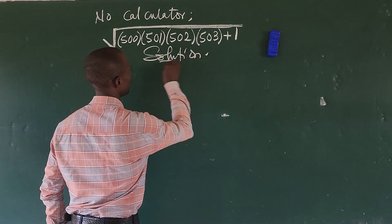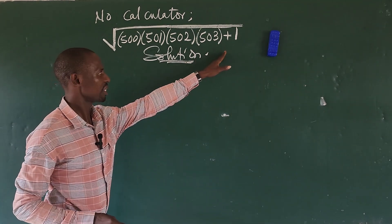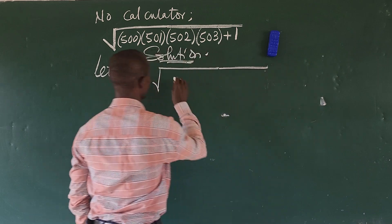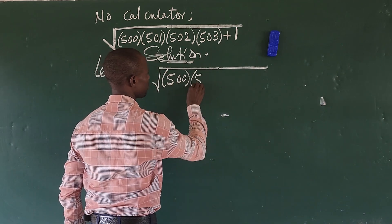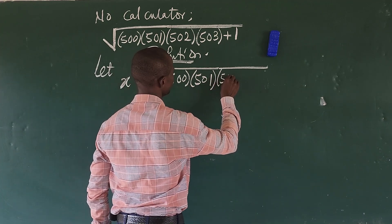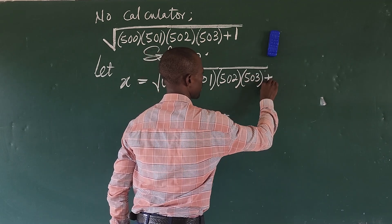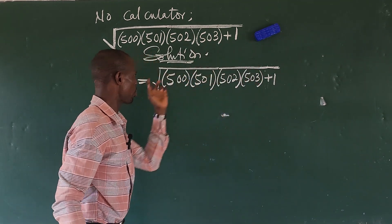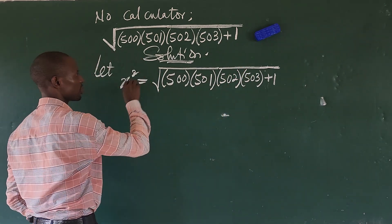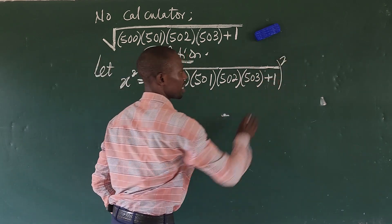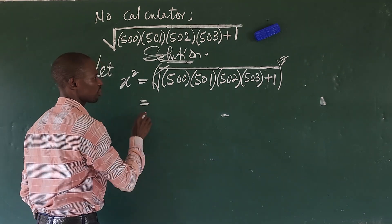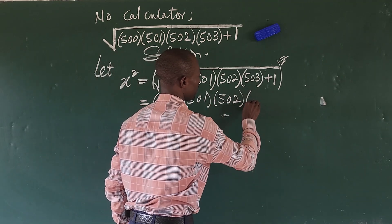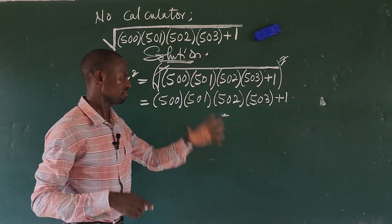Let's go into this without much waste of time. The first step is to let x equal whatever we have under the radical. So let x equal the square root of 500 times 501 times 502 times 503 plus 1. To avoid writing the radical sign repeatedly, we'll square both sides, so x² equals 500 times 501 times 502 times 503 plus 1.